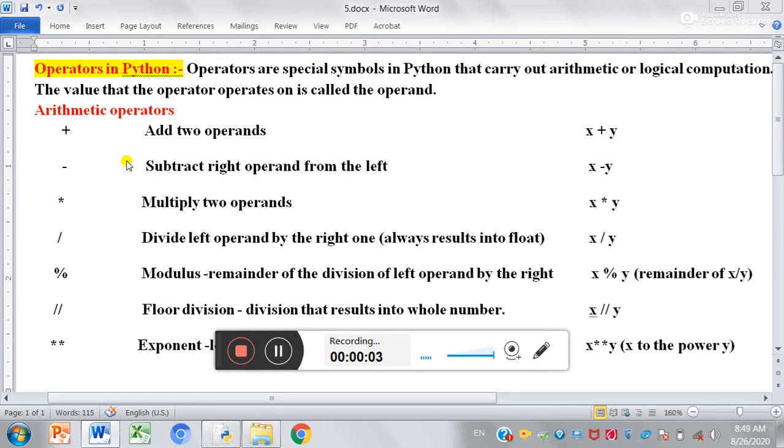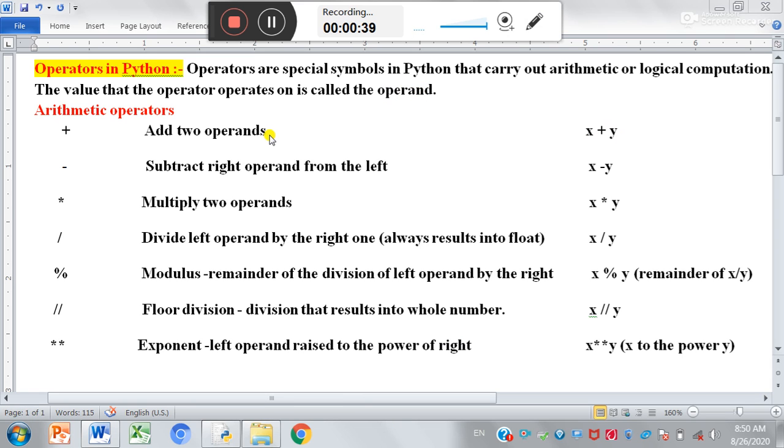Hello kids. Today we will do operators in Python. Operators are special symbols in Python that carry out arithmetic and logical computations. The value that the operator operates on is called the operand. For example, this plus operator is operating on these x and y values. So here x and y will be called as operands. So today we will cover only arithmetic operators.